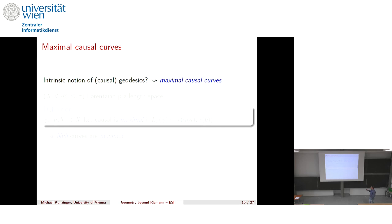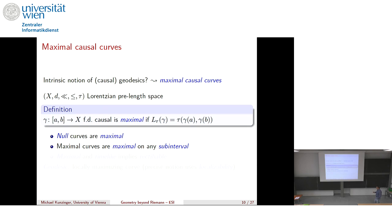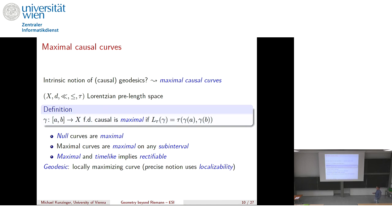Geodesics in this setting are maximal causal curves: curves that realize the time-separation function, i.e., are as long as possible. This is dual to the metric geometry setting where geodesics minimize distance. Maximal curves are maximal on any sub-interval, and maximal plus time-like implies rectifiable. Locally maximizing curves are called geodesics.